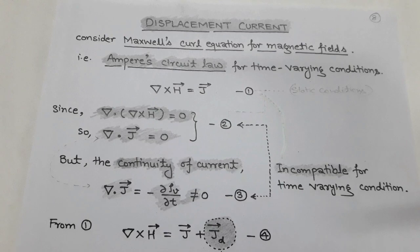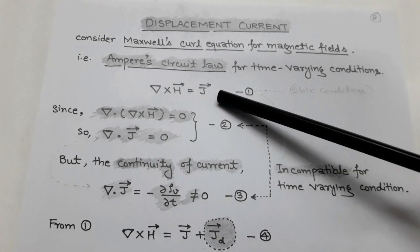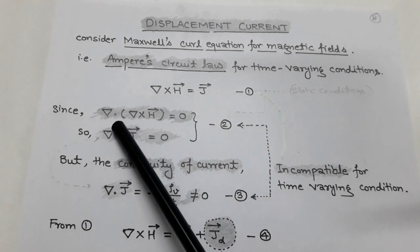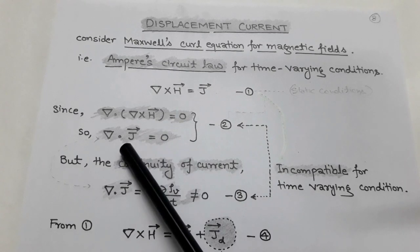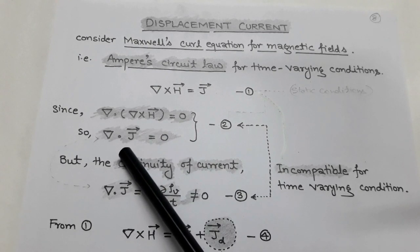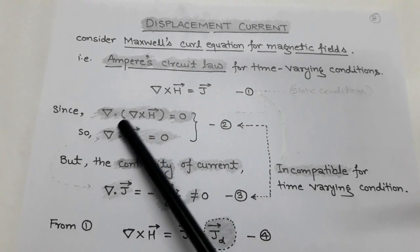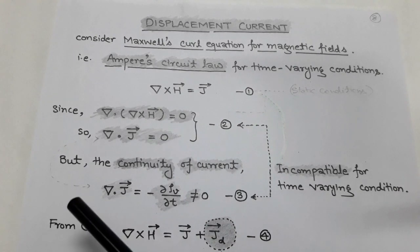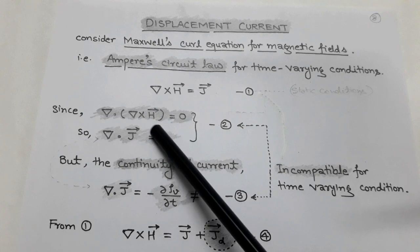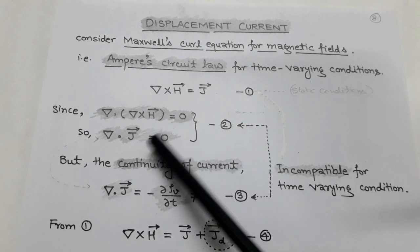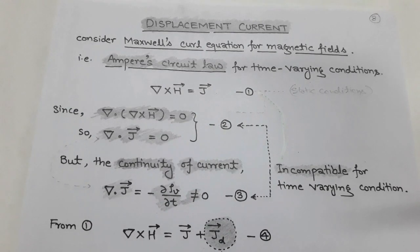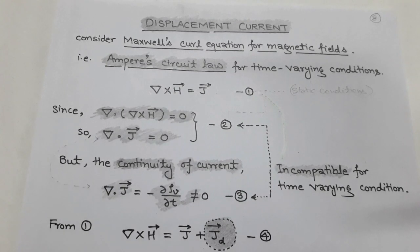Here J vector is called current density. And we take a divergence on both sides, then the left side becomes divergence of curl of H vector and right side becomes divergence of J vector. As we know the identity that the divergence of curl of any vector is equal to zero. So the divergence of curl of H vector becomes zero, and also divergence of J vector equals zero. So these are the static conditions which satisfy Ampere's circuital law, that is curl of H equals J vector.